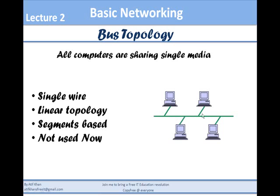You can see that there is one cable and every computer is connected with the same cable. Because every computer is connected with the same cable, there must be segments in the cable. A segment is a piece of a cable. Here, four computers are connected with segment 1, segment 2, and segment 3 — three cable segments create the topology. As computers are extended, we add one more segment.